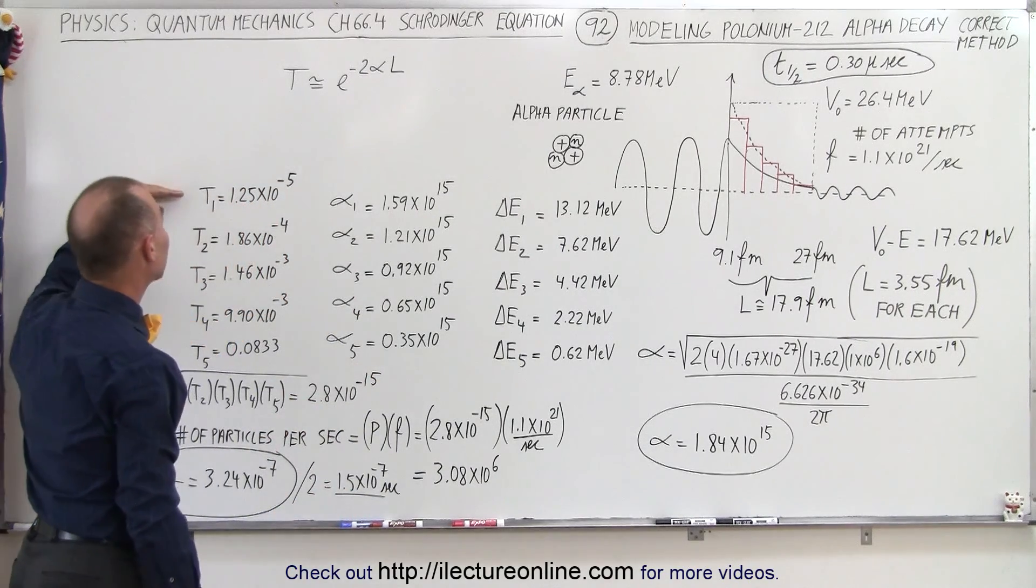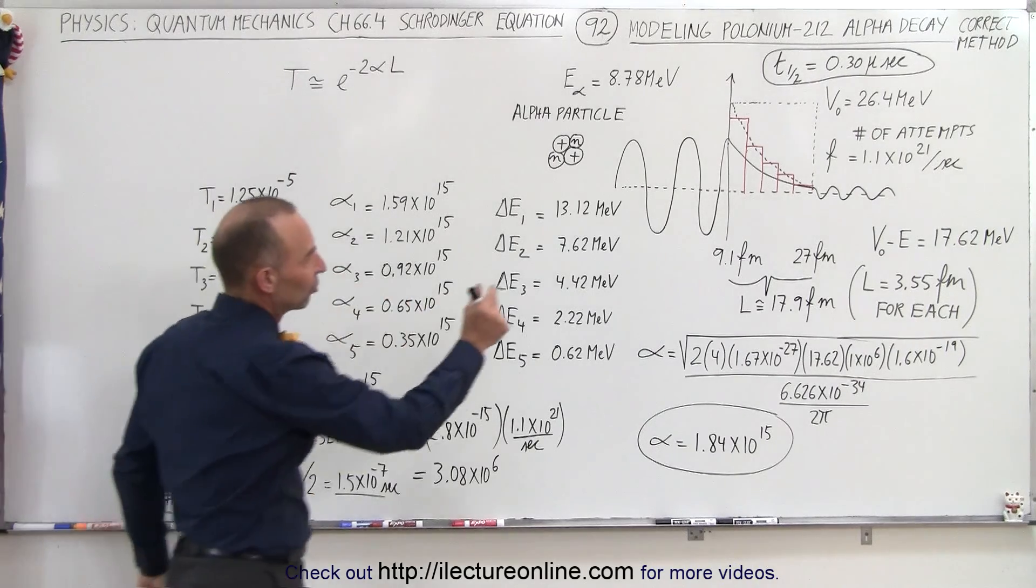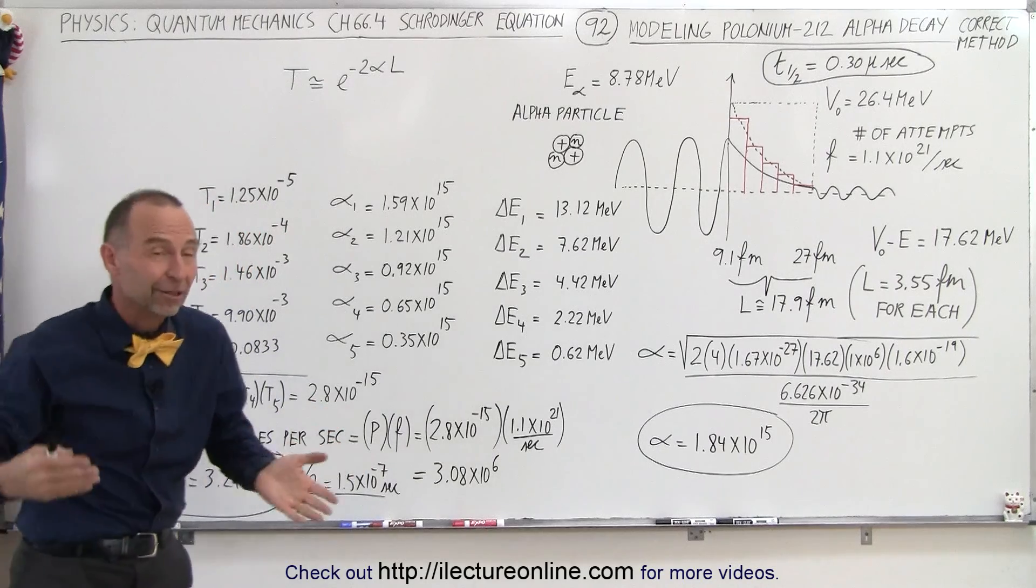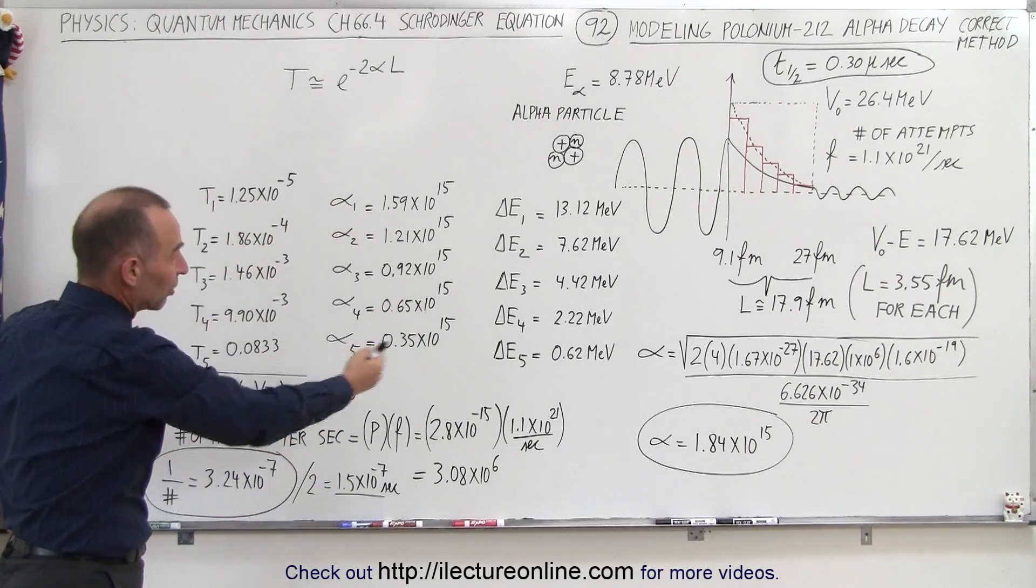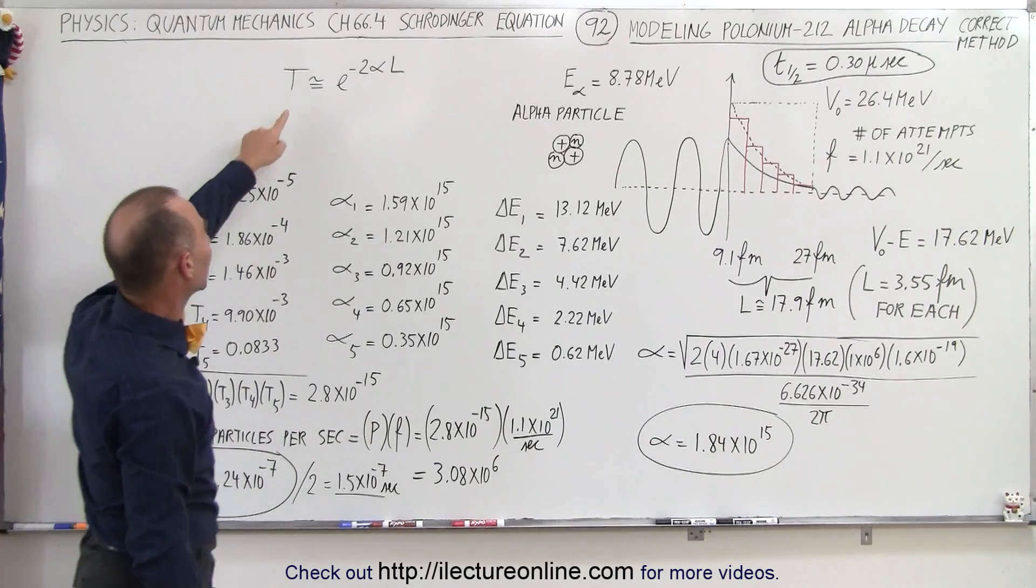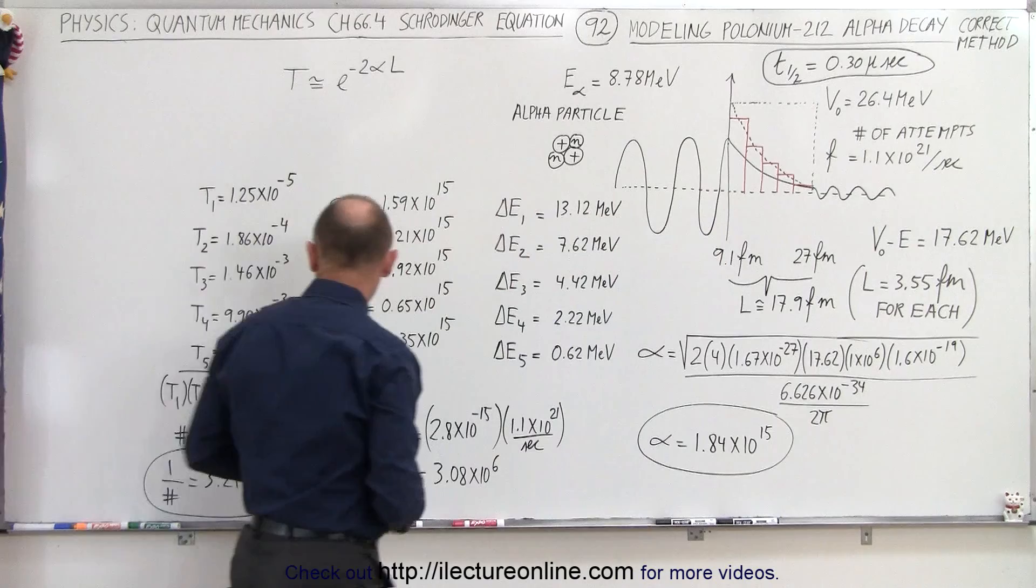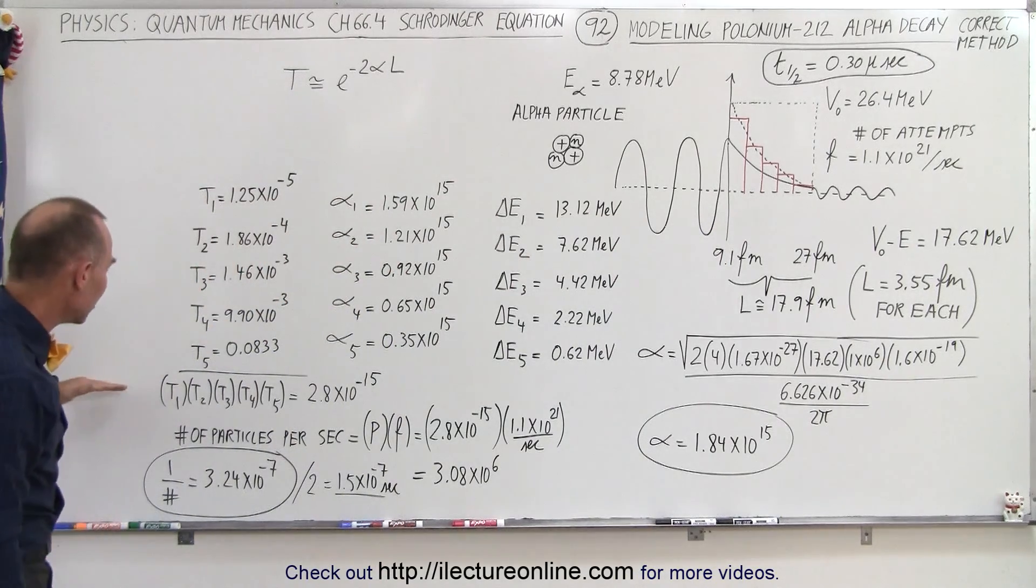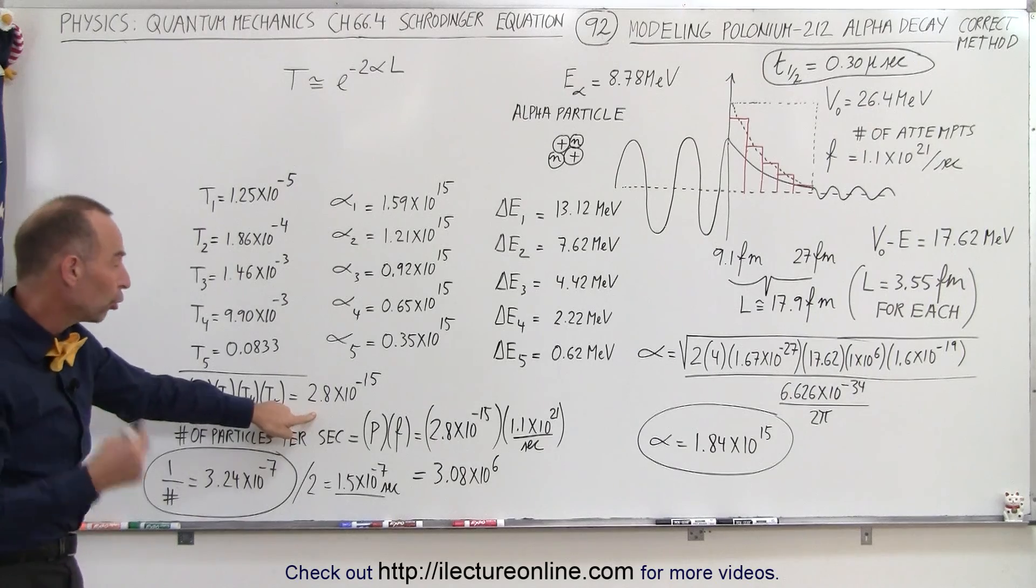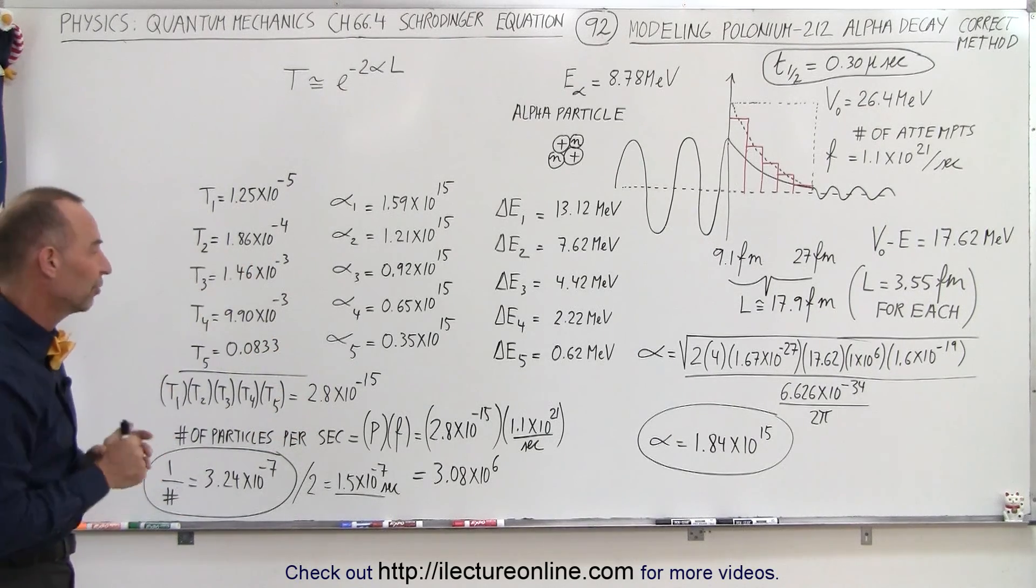Then we calculated the probability of the particle breaking through each of the sections of the barrier. So we did it five times, and you can see I've did all the work in advance otherwise it would take way too long to calculate this while we're filming. But then we can see that if we take the probability for each of the five sections of the barrier, then here are the five probabilities. If we then multiply all the probabilities together, this would then be the total probability of a particle breaking through all five sections of the barrier.